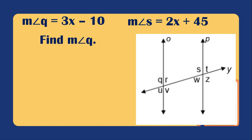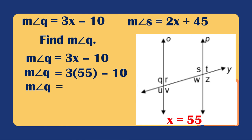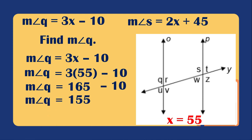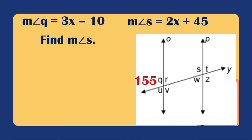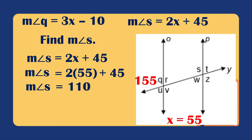Now we solve for the measure of angle Q: using 3x minus 10 with x equals 55, we get 3 times 55 minus 10, which is 165 minus 10, so the measure of angle Q is 155 degrees. For angle S, using 2x plus 45 with x equals 55: 2 times 55 plus 45 equals 110 plus 45, so the measure of angle S is also 155 degrees.